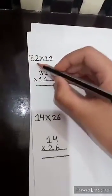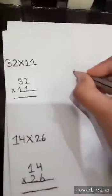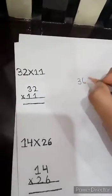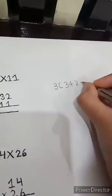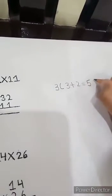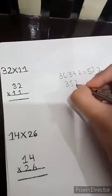I am taking number 32. So our sum is 32 multiplied by 11. First we have to take digit 3. Then take the sum of 32, means 3 plus 2 is equal to 5. Now take 2. So our answer is 352.